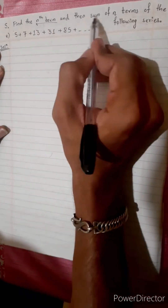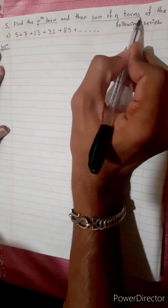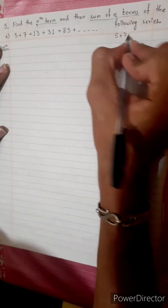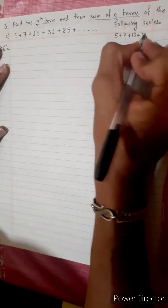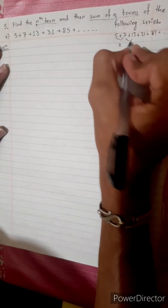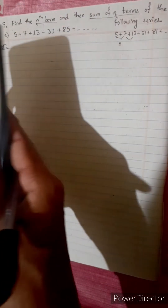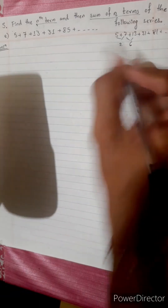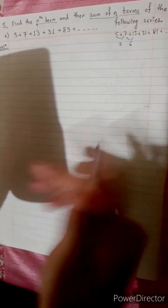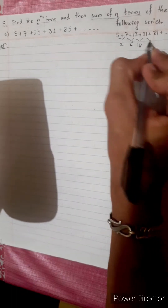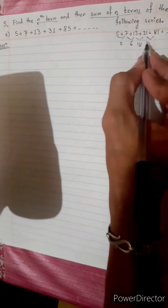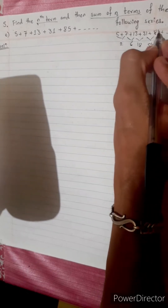Find the nth term and sum of nth term. The series is: 5 plus 7 plus 13 plus 31 plus 85. The differences are: 13 minus 7 equals 6, 31 minus 13 equals 18, 85 minus 31 equals 54. The differences are 2, 6, 18, 54.